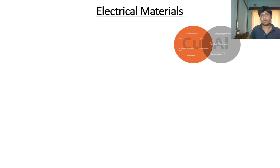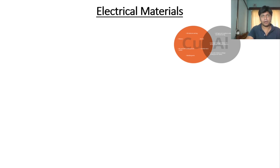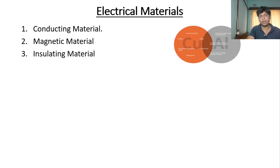Hello guys, welcome to today's topic based on electrical materials. In this particular lecture we are going to figure out what materials are generally used for the construction of any electrical machines. Without wasting any time, let us start. Generally there are three types of electrical materials: conducting materials, magnetic materials, and insulating materials. In this lecture we will discuss conducting materials; magnetic and insulating materials will be discussed in our next lecture.